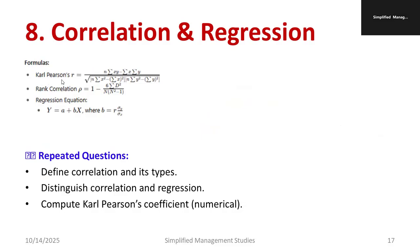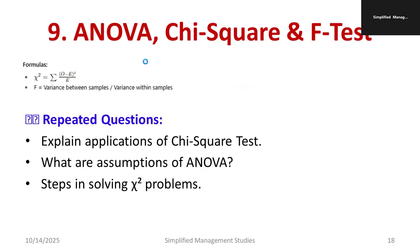Regarding correlation and regression: study Karl Pearson's correlation, rank correlation, and regression. Important questions include: define correlation and its types, difference between correlation and regression, compute Karl Pearson's coefficient (numerical questions expected), and remember the rank correlation formula and regression equation formulas. For ANOVA, chi-square, and F-test, the relevant formulas are also available.